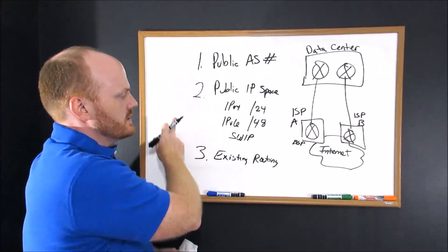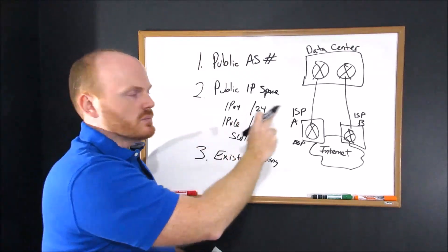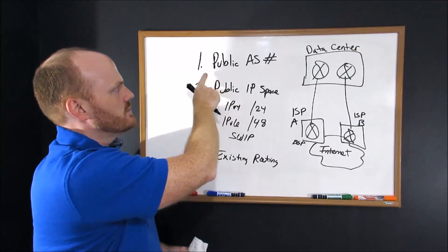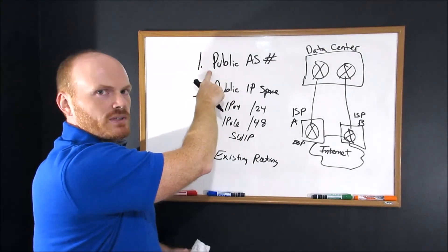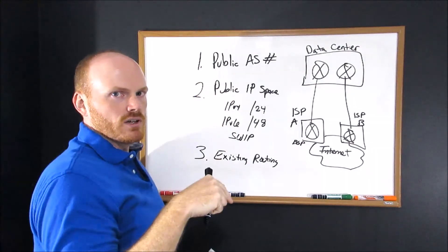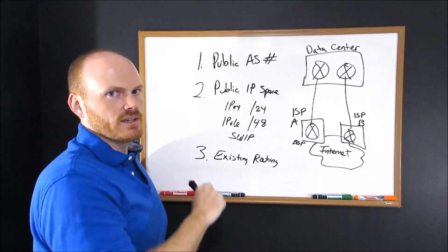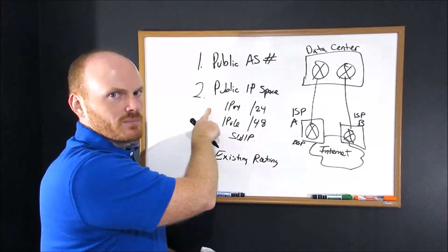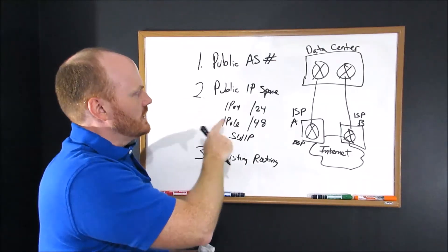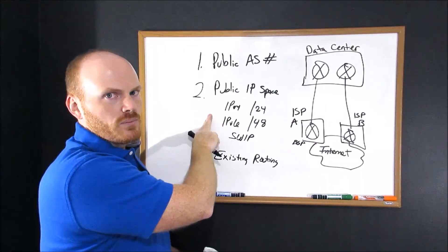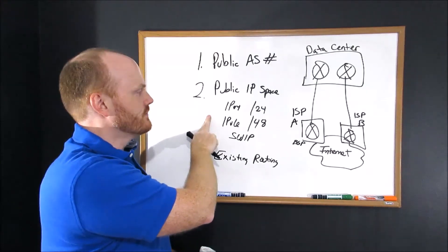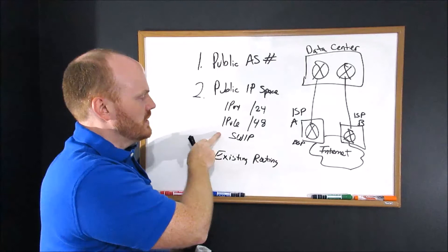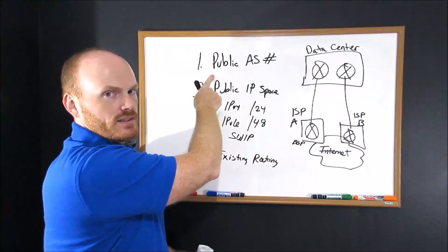So these are the three things you want to keep in mind before you start talking to the second ISP. Just to review, you want to obtain your own public AS number, and again there's a link below to ARIN, which is one organization where you can purchase an AS number. You want to make sure you know where you're getting your IP space from. I highly recommend that you purchase your own IP space if possible. If you have to borrow the IP space from an ISP, make sure they SWIP it with your new public AS number.